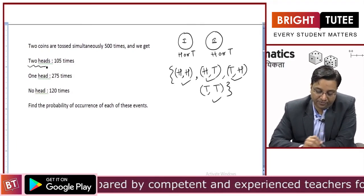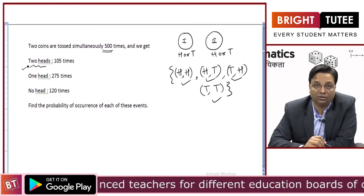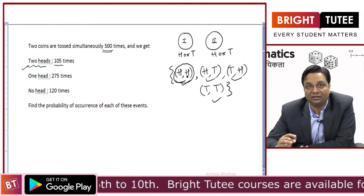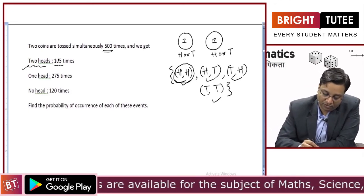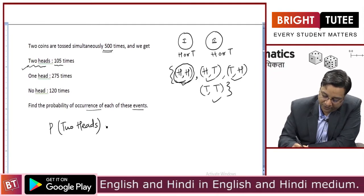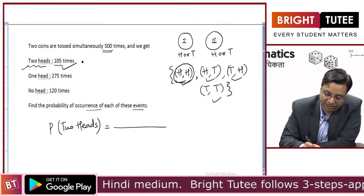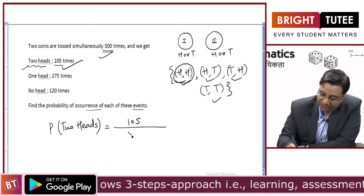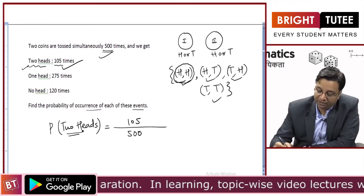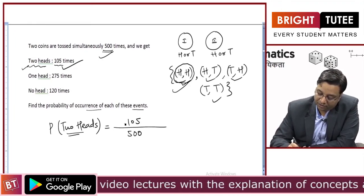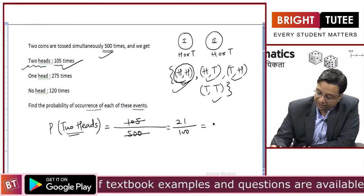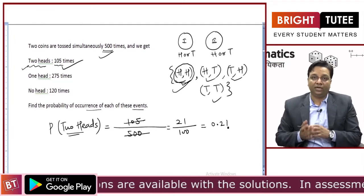Out of 500 times, we get two heads 105 times. So probability of two heads equals 105 (number of times the event occurred) divided by 500 (total number of times the experiment was performed). You can simplify: 105/500 = 0.21 is the probability of two heads coming on top.